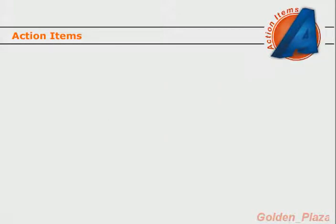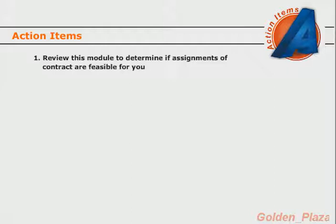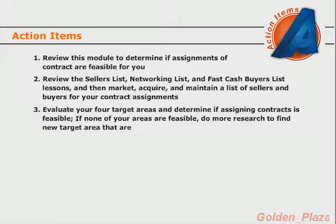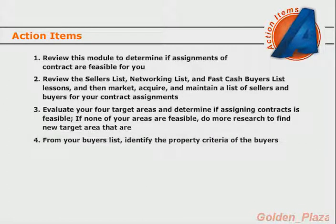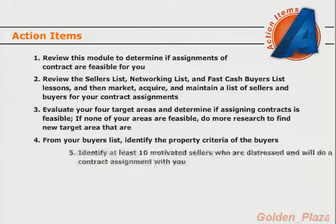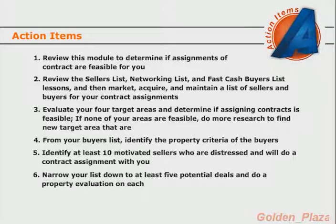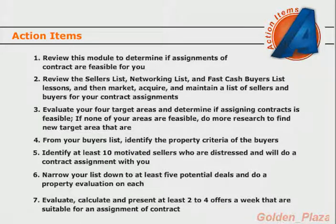Action items before your next lesson: Review this module to determine if assignments of contract are feasible for you. Review the sellers list, networking list, and fast cash buyers list lessons, then market, acquire, and maintain a list of sellers and buyers for your contract assignments. Evaluate your four target areas and determine if assigning contracts is feasible — if none are feasible, do more research to find new target areas. From your buyers list, identify the property criteria; from your sellers list, identify at least 10 motivated sellers who will do contract assignments, narrow down to at least five potential deals, do a property evaluation on each, and evaluate and present at least two to four offers per week suitable for an assignment of contract.